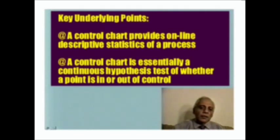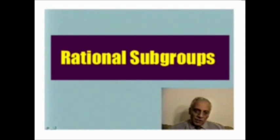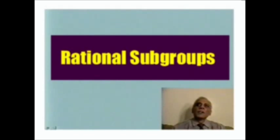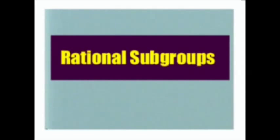Now we move on to talk about more practical aspects: the rational subgroups — the samples that we collect on a daily basis. How do we go about selecting these samples? Expect to see some practical guidelines as well as some theoretical guidance that will help you in selecting appropriate rational subgroups. Rational subgroups are the samples that we collect on a timely basis — daily, weekly, or shift by shift — for monitoring the process.